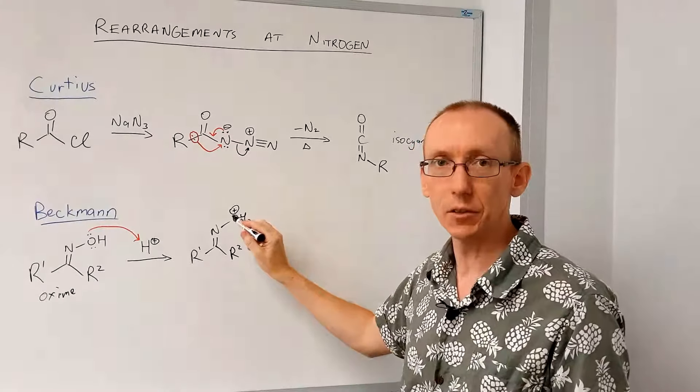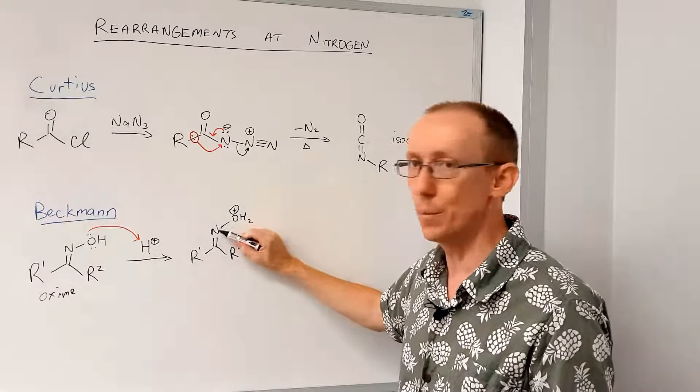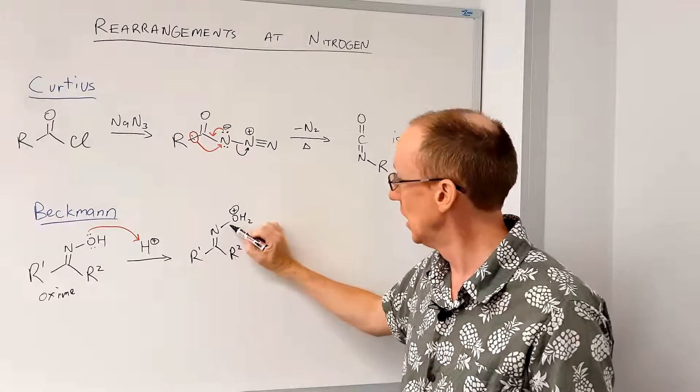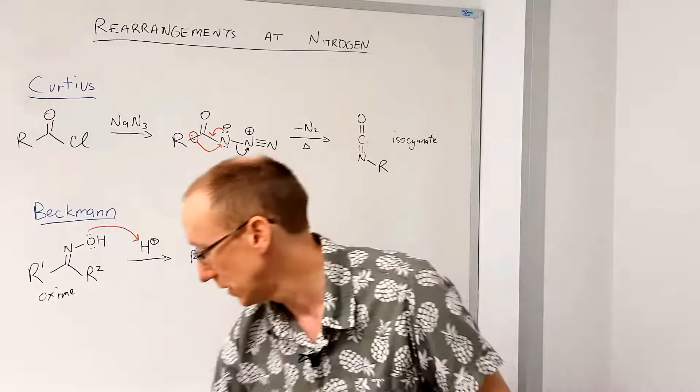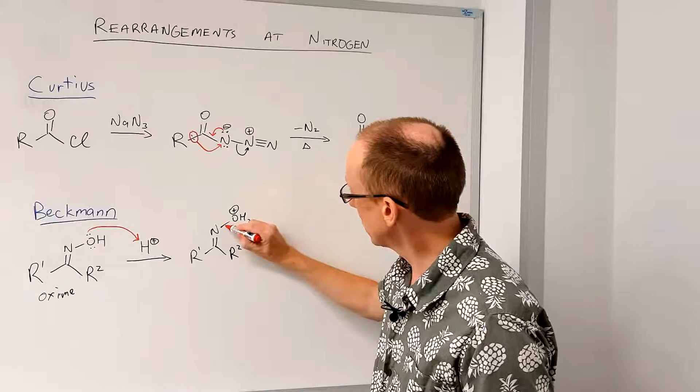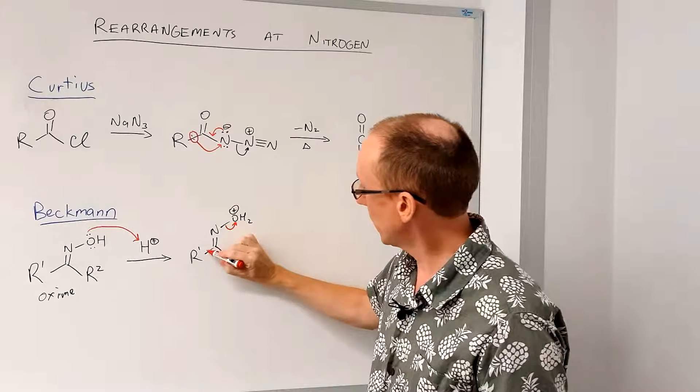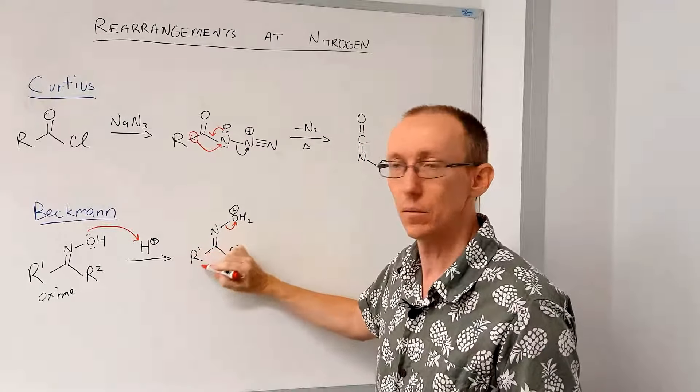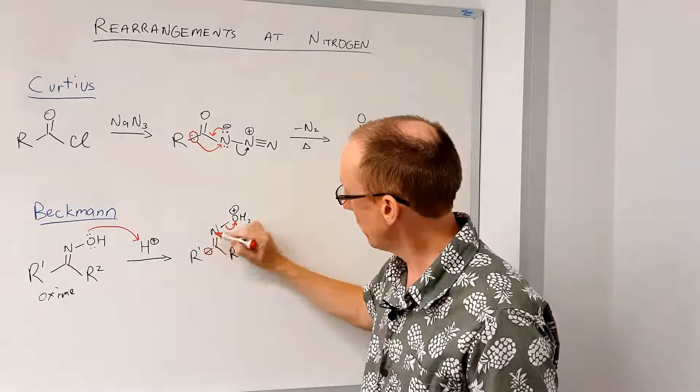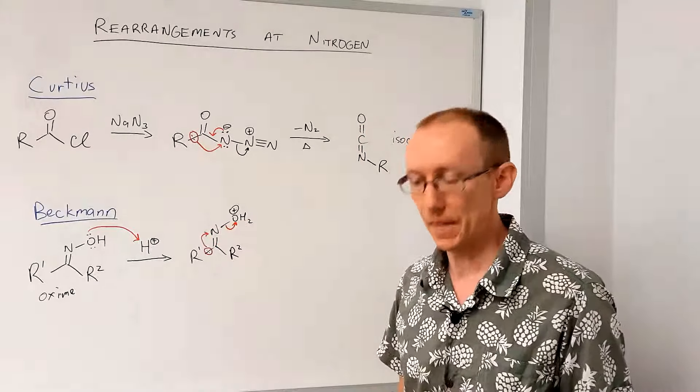Sometimes we'll form carbon cations. In this case, the cation would be quite unstable. So what happens is we lose that group at the same time as an R group migrates. So if this departs with that pair of electrons, then we can get this bond here and this R1 group, that pair of electrons with that R1 group migrate across that nitrogen at the same time.